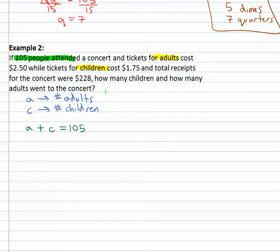We're also given a little bit of information that a child cost $1.75, let me do that in a different color. Children cost $1.75, adults cost $2.50, and total receipts was $228. That tells us what value is assigned to each variable. An adult has a value at the concert of $2.50, I'm going to write 2.5. A child at the concert has a value of $1.75 or 1.75, and when we add those values together, the total amount of money that came in for the concert was $228.